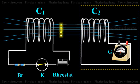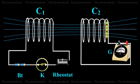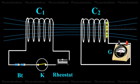This causes the deflection in the galvanometer. On releasing K, the galvanometer shows deflection in the opposite direction. This indicates that a current is again induced in the coil C2.